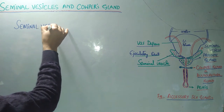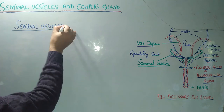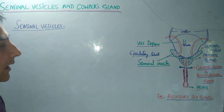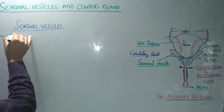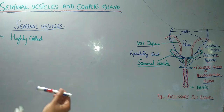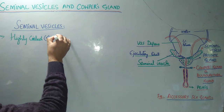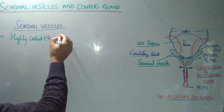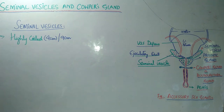The seminal vesicles are two in number and are located just at the point where the urethra comes out from the urinary bladder, one on either side. They are highly coiled, and their length in a coiled state is about four centimeters. However, when we analyze these glands straightened out, their length becomes about nine centimeters.